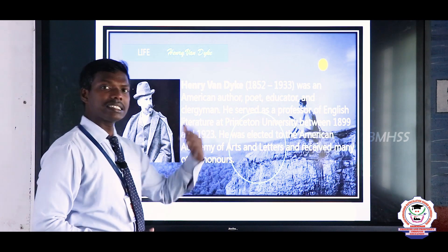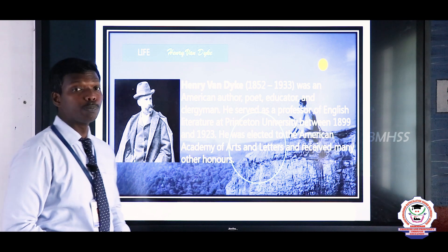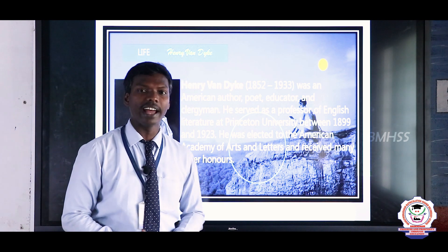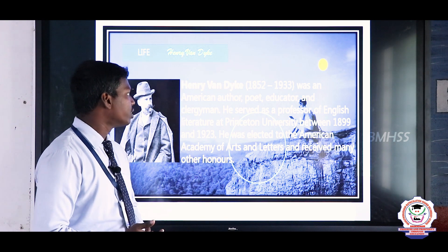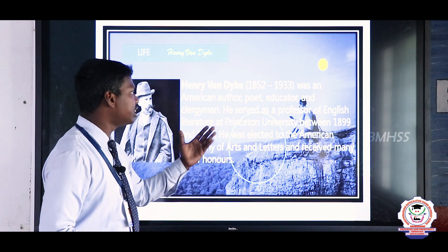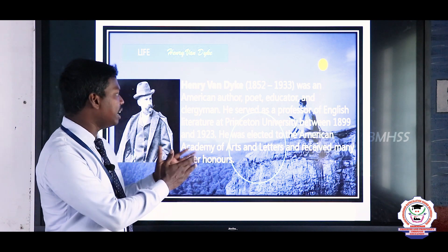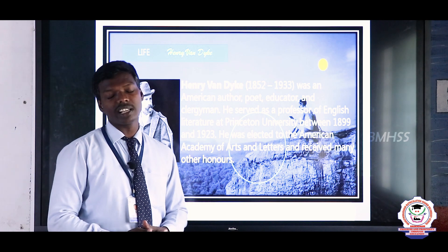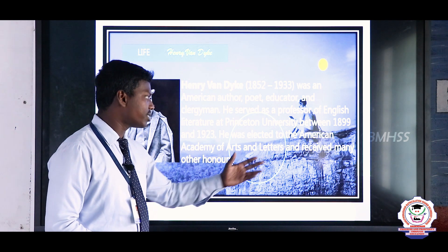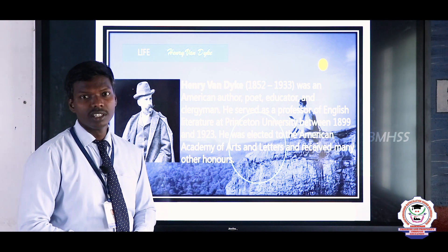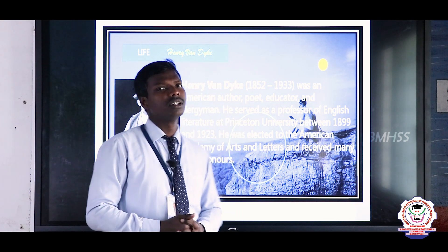Let us know something about the author. Henry Van Dyke was born in the year 1852 and died in 1933. He was an American author, poet, educator, and clergyman. He served as a professor of English Literature at Princeton University between 1899 and 1923 — nearly 24 years. He was elected to the American Academy of Arts and Letters and received many other honors. He is one of the very famous poets and won so many readers for his poems.